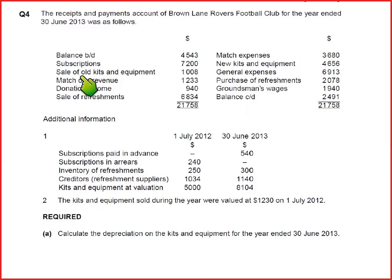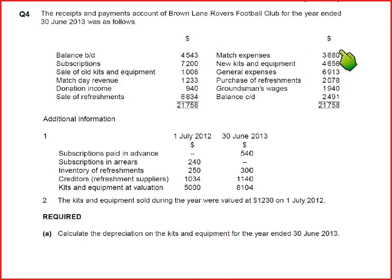These are called subscriptions. Then we have sale of old kits and equipment — we have sold non-current assets. Now in order to raise some finance for the club, we also arrange some sort of events. In this case the event is matches — there can be concerts, exhibitions, or donations. So we have match day revenue: we have arranged some matches for which we have earned revenue of 1,233. We have also incurred some expenses for matches, and we will be netting both figures to calculate profit or loss from matches.